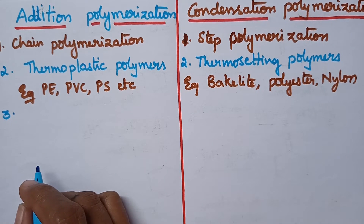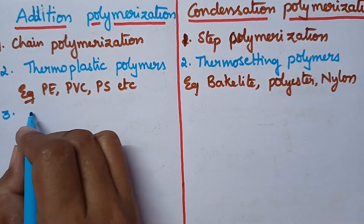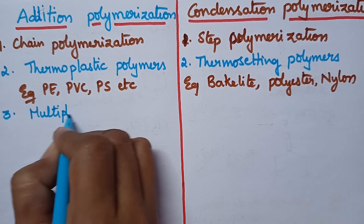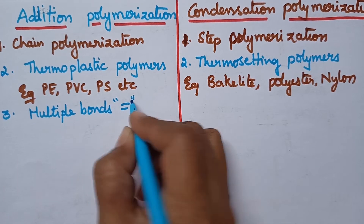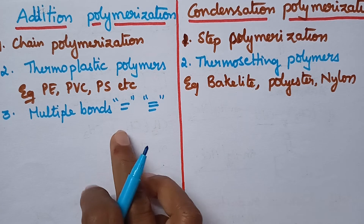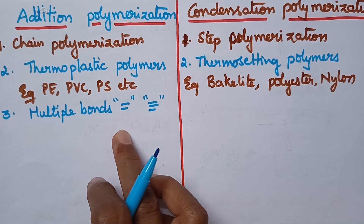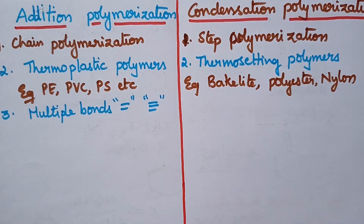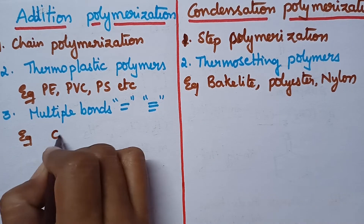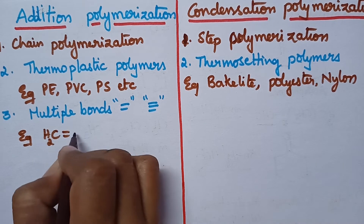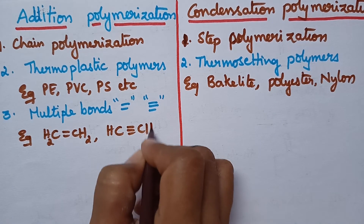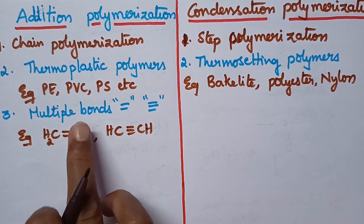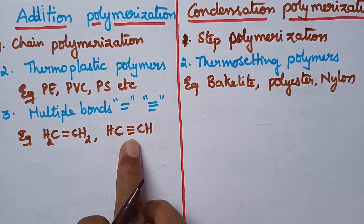The monomers containing multiple bonds — that means double bond or triple bond — participate in addition polymerization. A good example is ethylene, CH₂=CH₂.